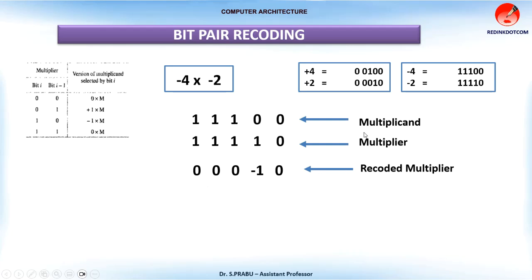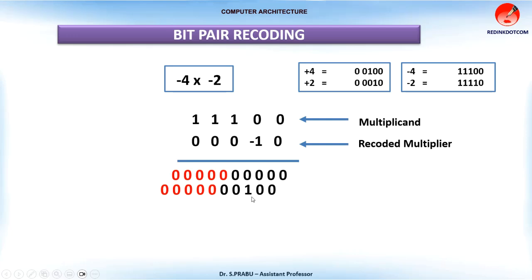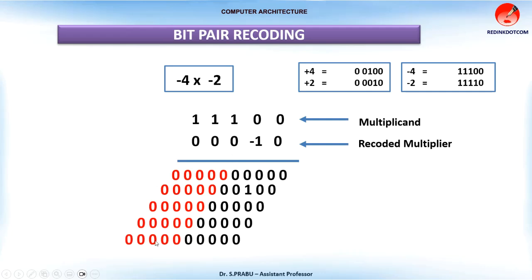Now I multiply the recoded multiplier with the multiplicand. When multiplying with 0, I get five zeros and then extend the sign bit — since the last bit is 0, I extend 5 more bits as 0. This is called sign extension. When multiplying with minus 1, it means taking the 2's complement of this number. This number is 1100, and its 2's complement is plus 4, that is 00100. I write 00100 here, and the remaining bits are sign extension, shown in red for clarity. Then multiplying by 0 gives 0. In the same way, the remaining partial products are calculated.